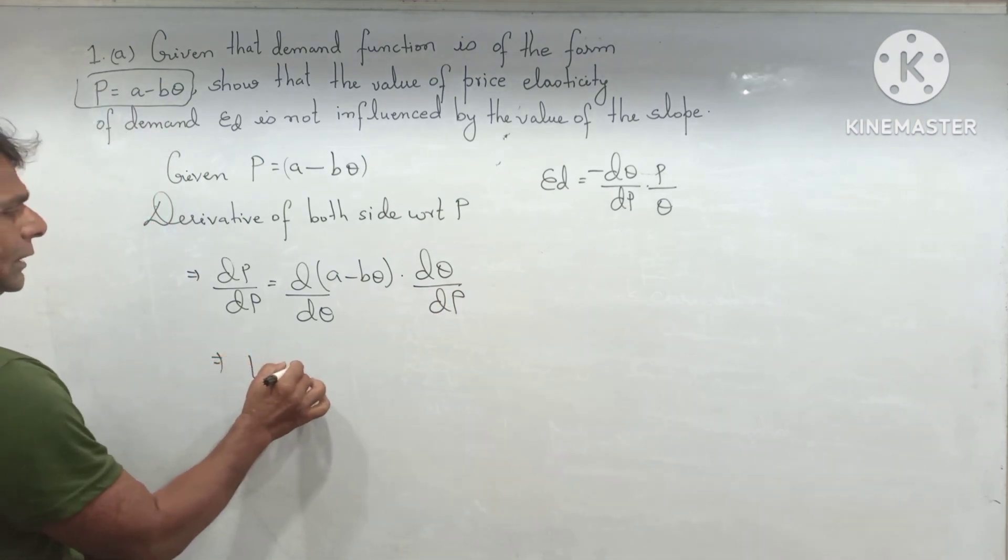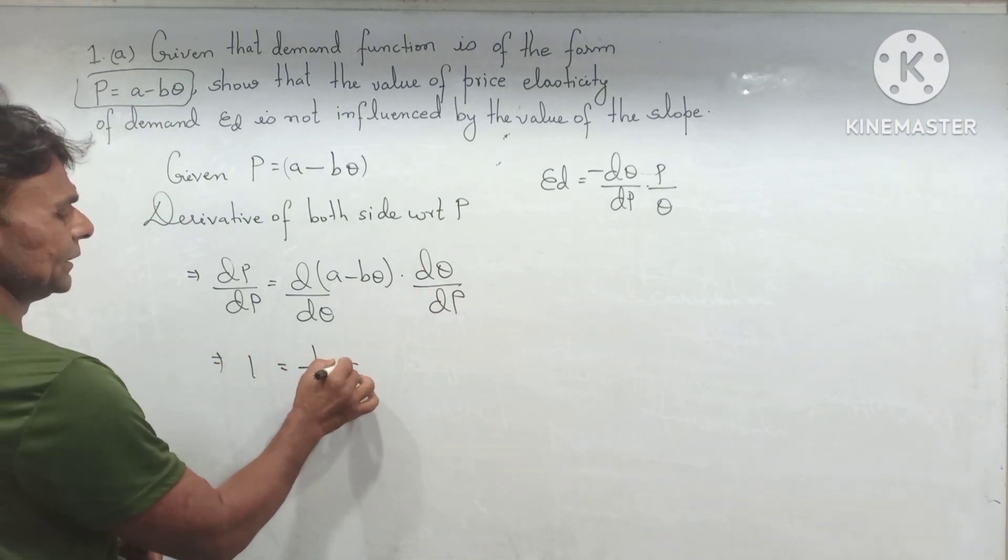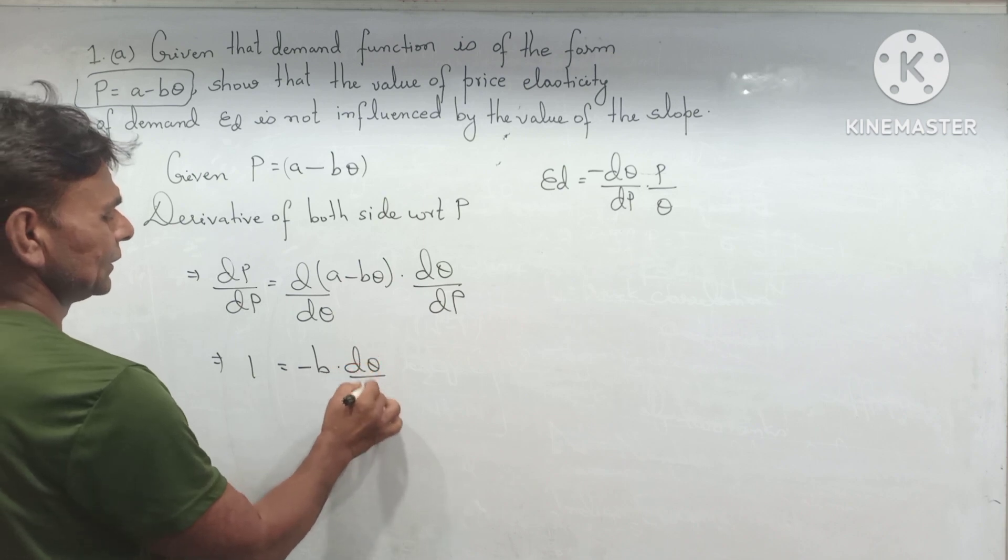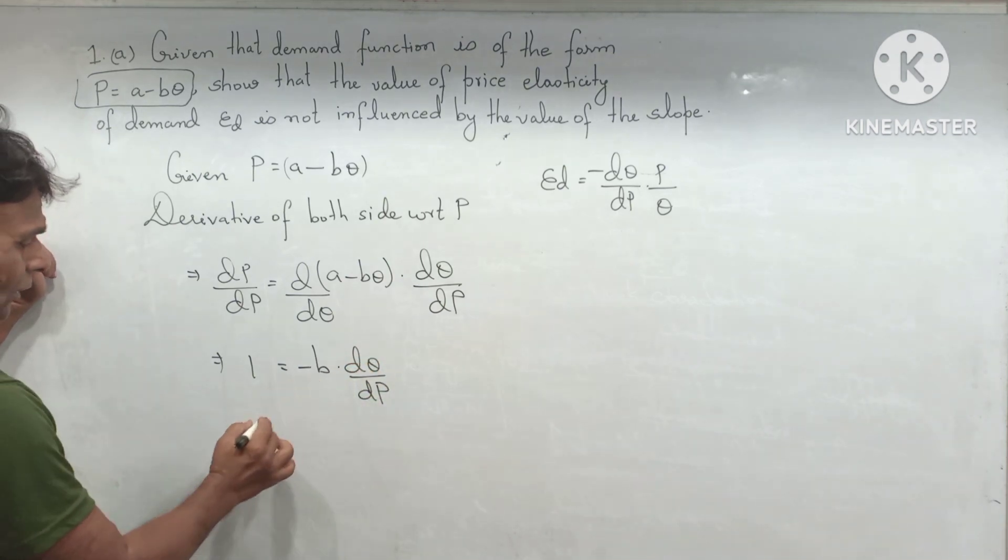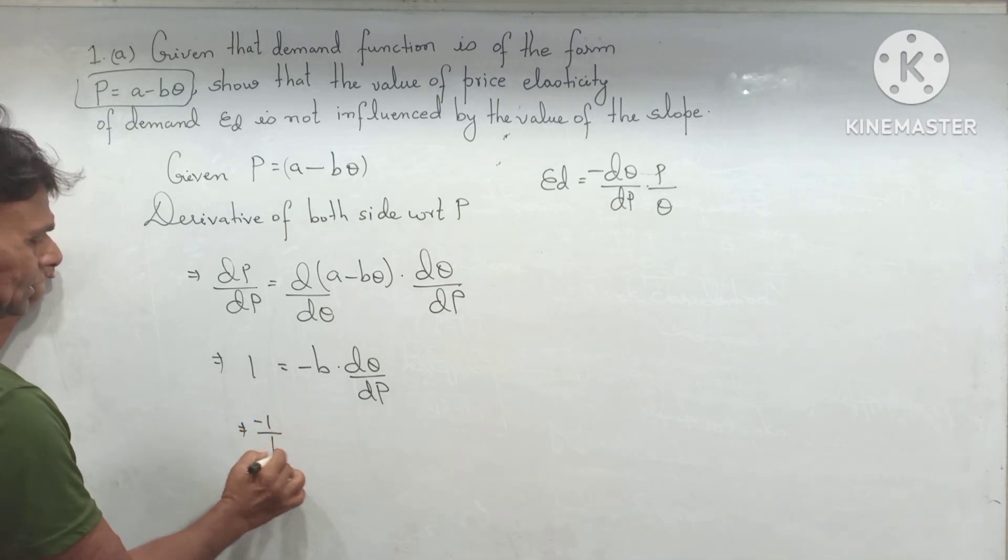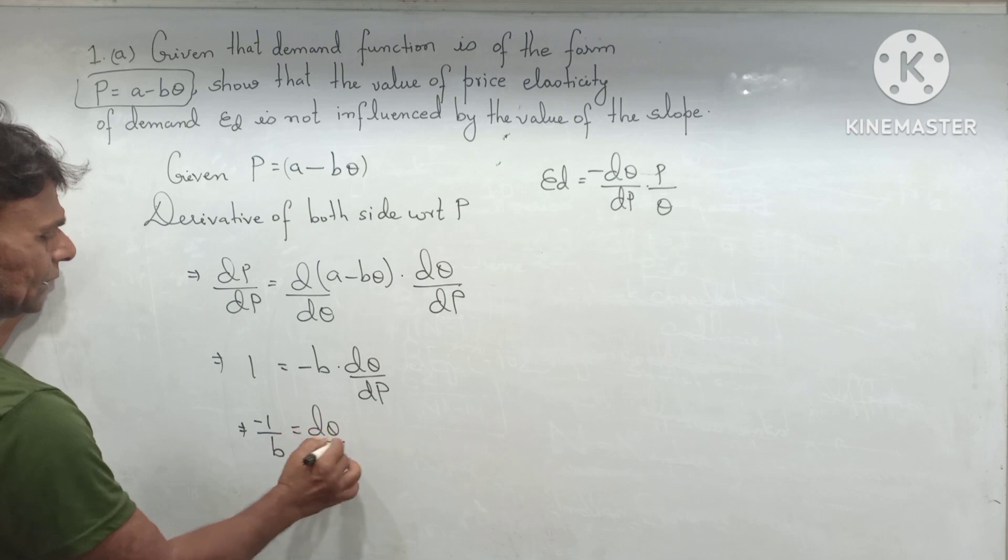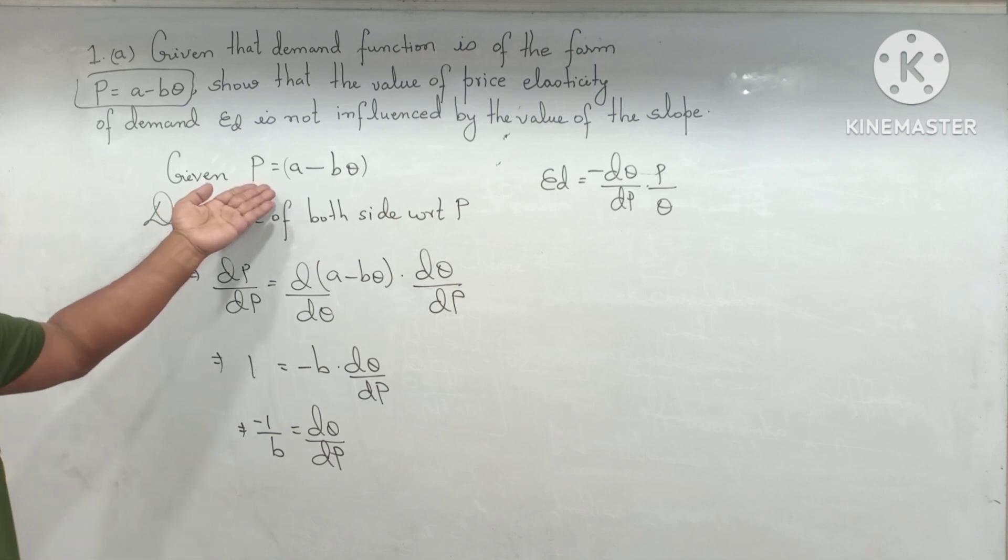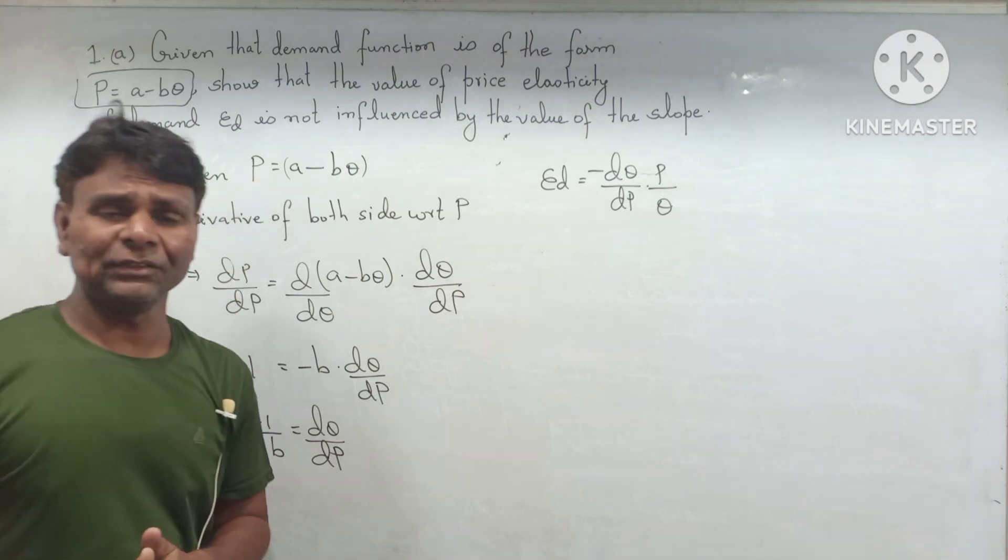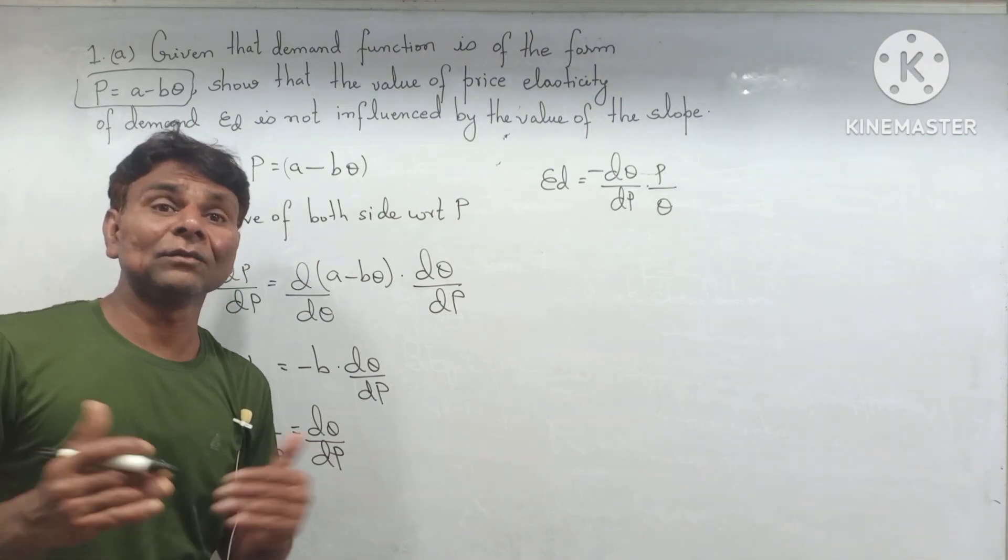Now 1 = -B times DQ/DP. And easily you can take the derivative using the inverse derivative rule.